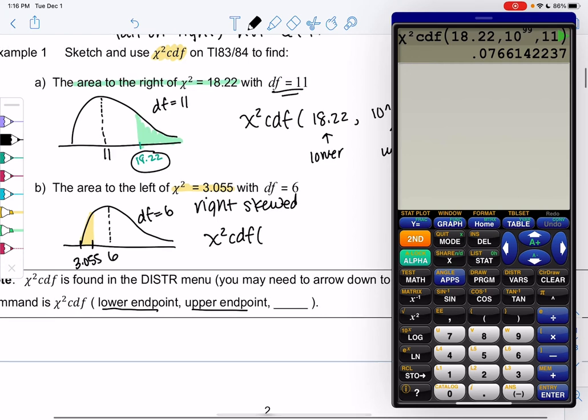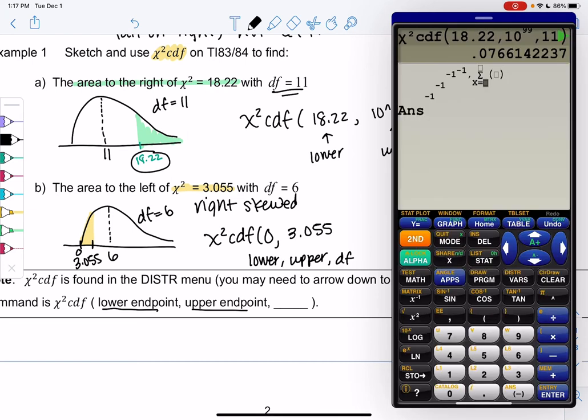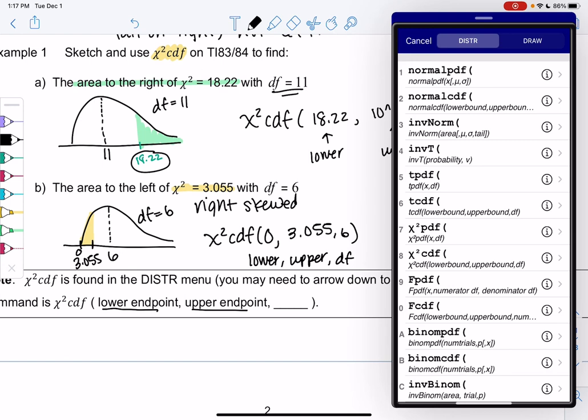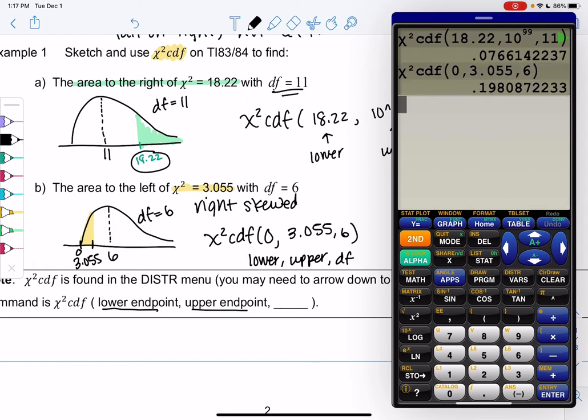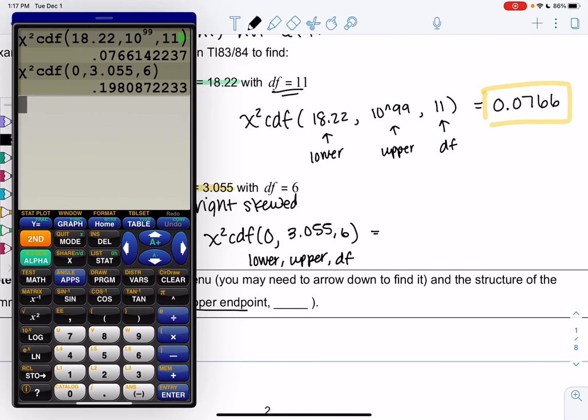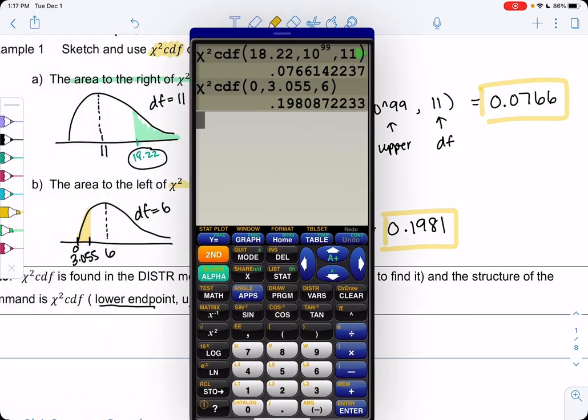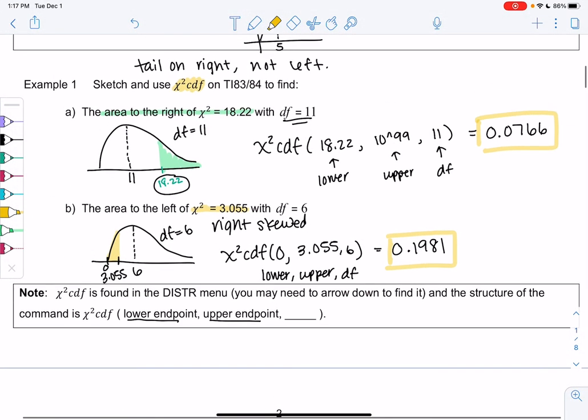My lower is actually 0 because there are no negatives, there's no tail. My upper is 3.055, and degrees of freedom is 6. And then if you have your calculator, I'll go ahead and try that one more time. So lower, upper, degrees of freedom. You should get an area of about 0.1981. Probabilities are always less than 1. And there we go, not too bad.